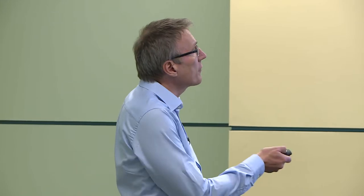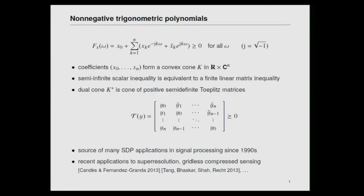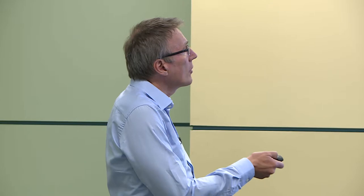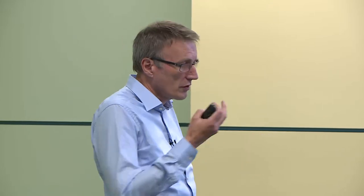This is the simplest constraint of this type and it can be extended in many ways. You can have matrix polynomials where the coefficients are matrices and the constraint is that the matrix is positive semi-definite. You can have constraints where the inequality only holds on intervals, and it can be extended to rational functions, all via sum of squares theorems. The major non-trivial extension is to sum of squares theorems for multivariate polynomials.